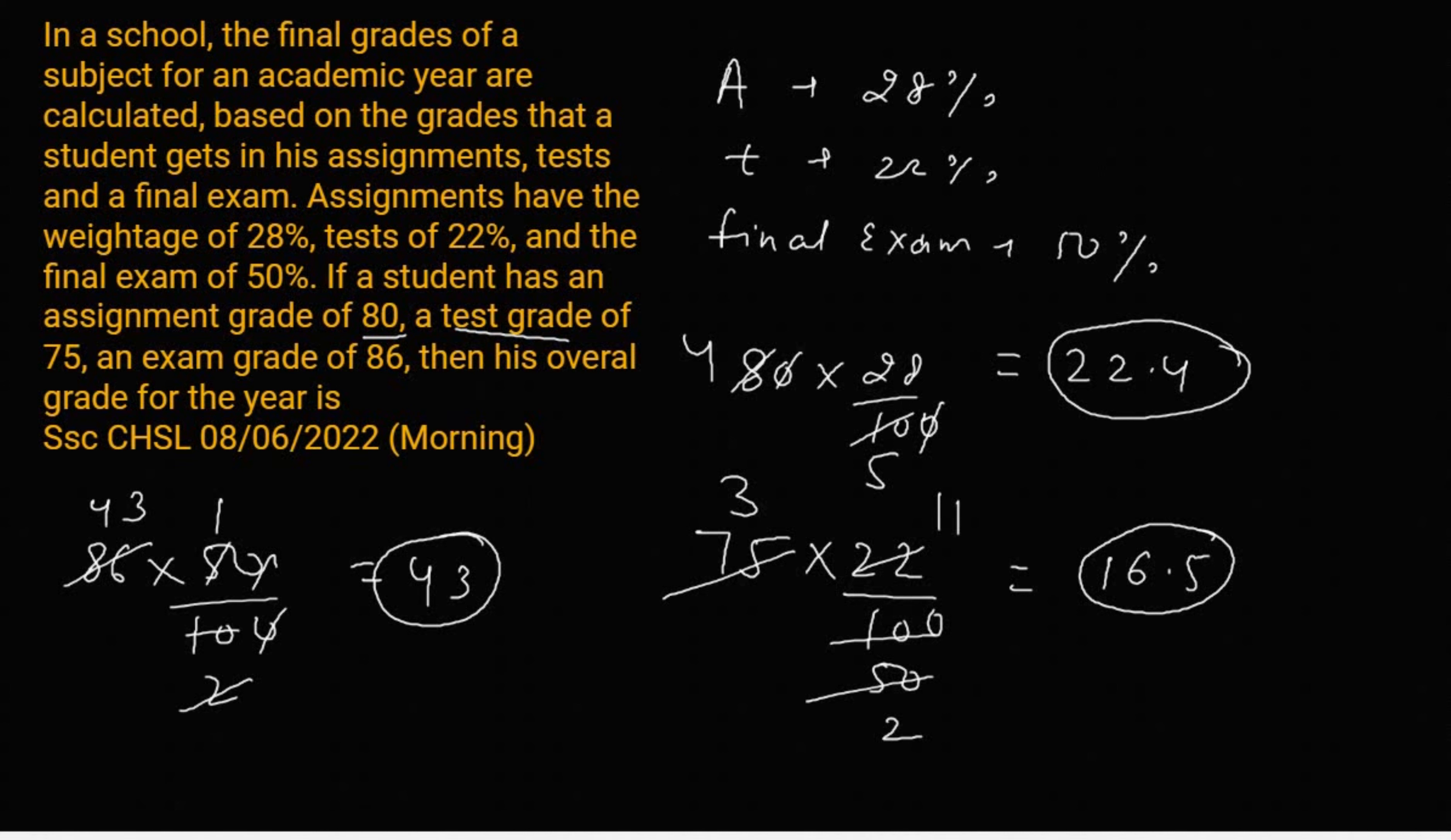Let's calculate the overall grade for the year. We will add them: 43 plus 22.4 plus 16.5. This will be 81.9. Answer.